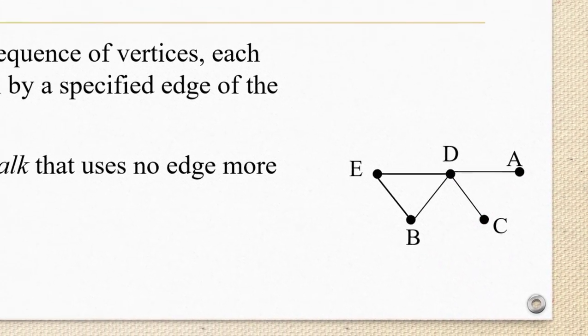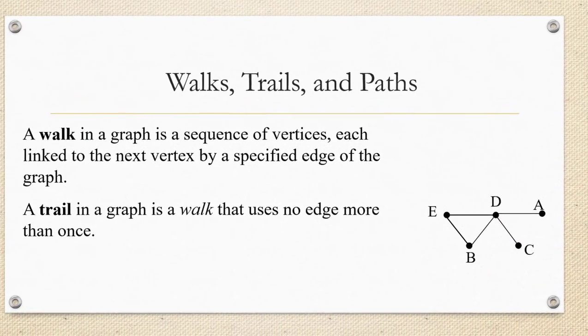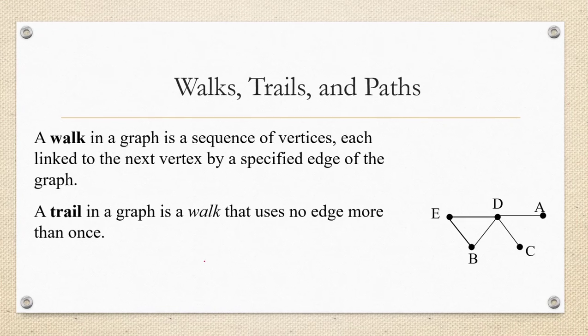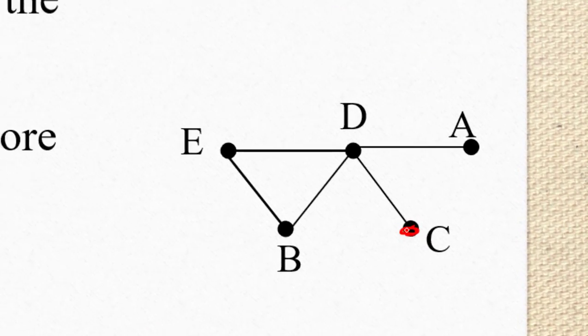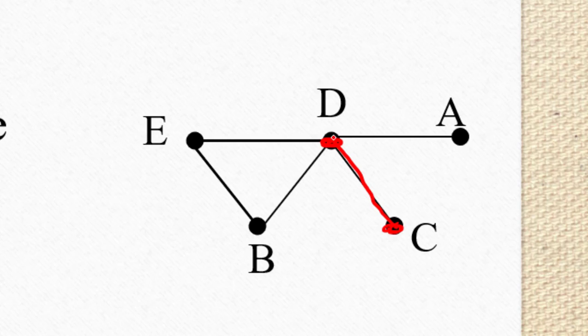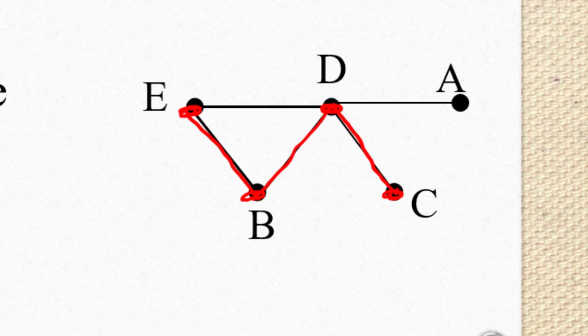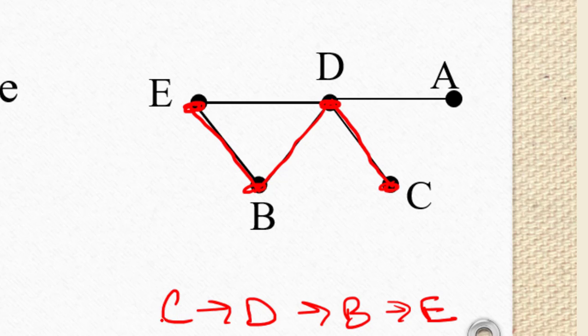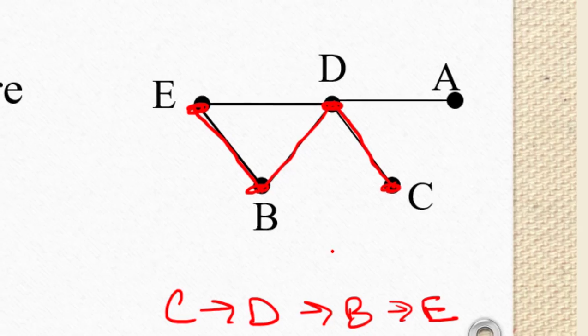If we add the restriction that we're not going to backtrack, we're not going to cover an edge more than once, we call this a trail. So as an example of a trail, I could maybe start at C and go to D and then to B and then to E. This would be an example of a trail, C to D to B to E. Just as long as I don't backtrack and go over the same segment again, it's considered a trail.